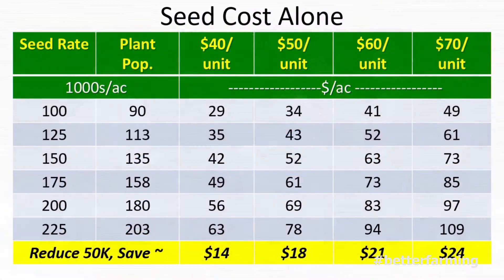Purdue's agronomy department has done research to back up these recommendations. Looking at seeding rates from 100,000 up to 225,000 seeds per acre, at $60 a unit, planting 200,000 seeds per acre costs $83 an acre. If you can reduce from 200,000 to 150,000, that's a $50,000 decrease — about $21 an acre in savings. Research results suggest you could actually reduce the seeding cost per acre and improve yield at the same time — a win-win situation you don't often get in agriculture.